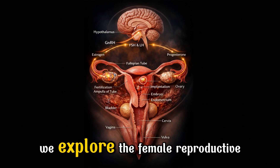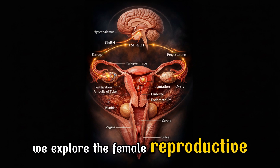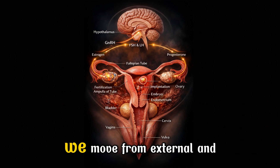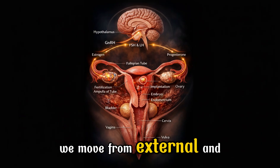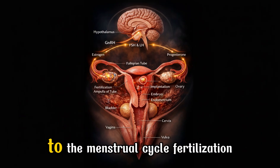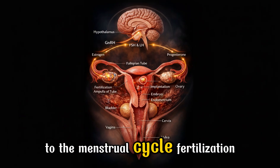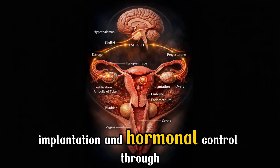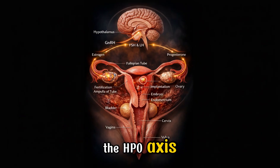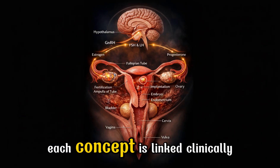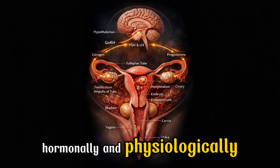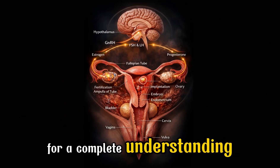In this lecture, we explore the female reproductive system from structure to function. We move from external and internal genitalia to the menstrual cycle, fertilization, implantation, and hormonal control through the HPO axis. Each concept is linked clinically, hormonally, and physiologically for a complete understanding.